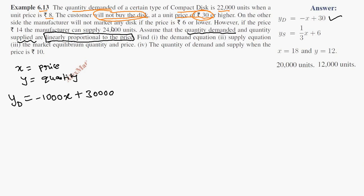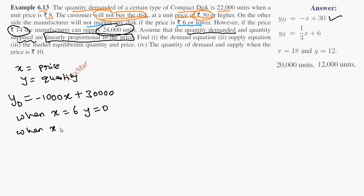On the supply side, the manufacturer will not market any disk if the price is Rs. 6 or lower. So when X is equal to 6, Y is equal to 0. The manufacturer can supply 24,000 units when X is equal to 14, so Y is equal to 24,000.